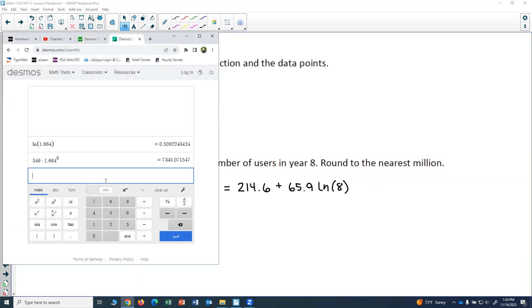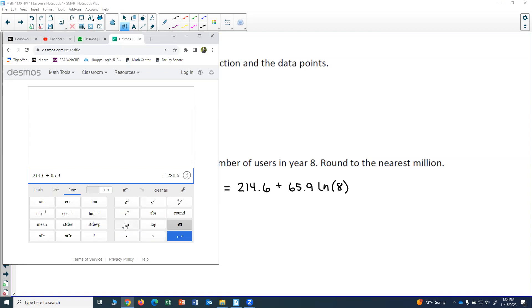Now I have to plug this into my Desmos calculator. So I go to desmos.com/scientific. I'll put in 214.6 plus 65.9. To get to natural log I select function, do natural log, go back to the main menu, select an 8. And we've got our value here.